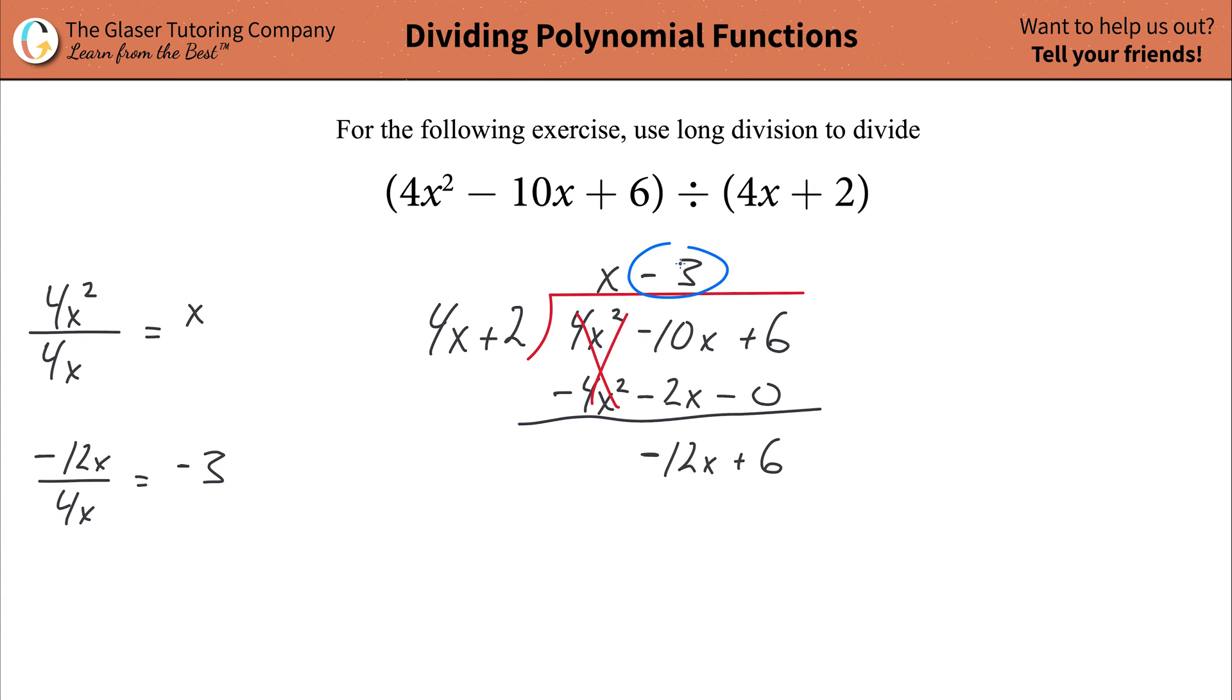Now, same process. Take this negative 3 or the minus 3. Almost forgot my steps. First, start with the subtraction symbol and then put in your parentheses. Now, take the negative 3 and multiply it by 4x. And that's going to work out to be a negative 12x. Then take the negative 3 and multiply it by the positive 2 and that will work out to be negative 6.